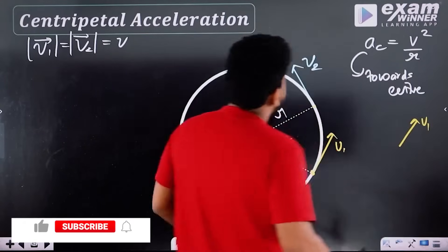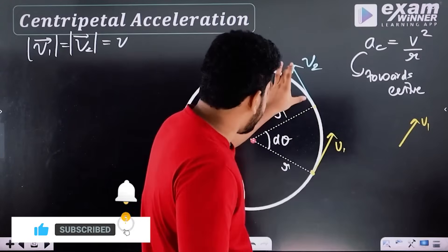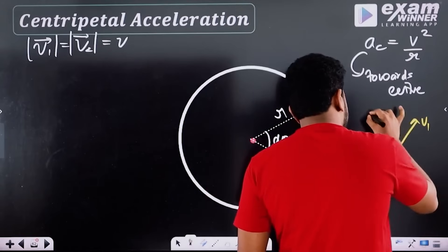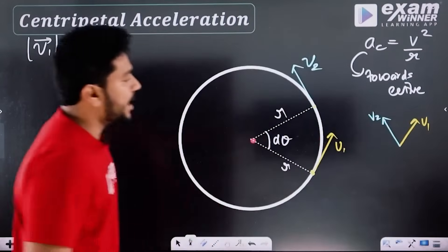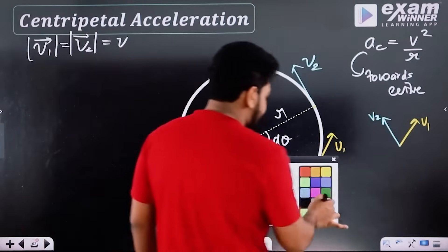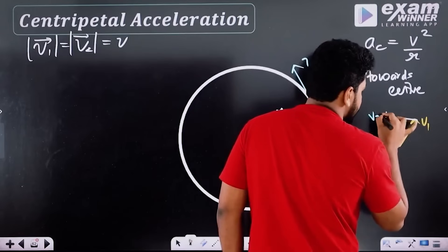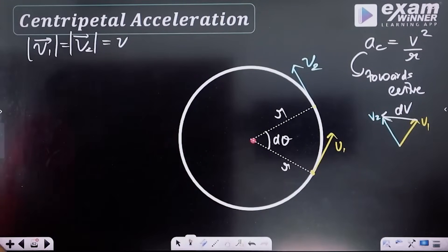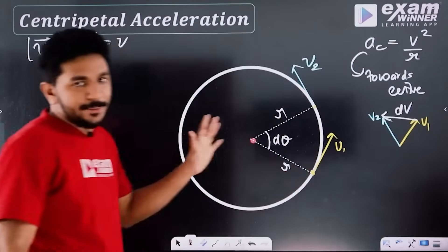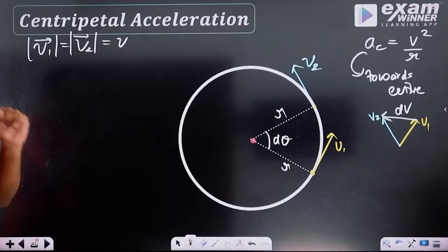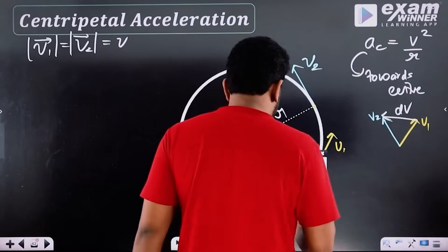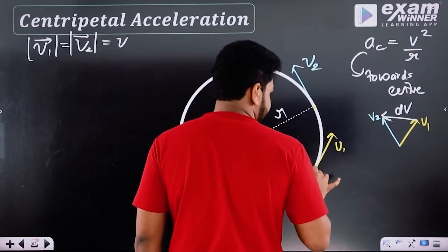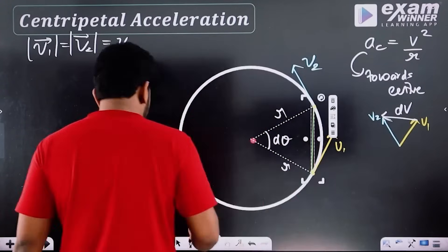V1 point, V2 point. I will give you a DV — the change in velocity. This is DS — that arc length element DS. This is the E line, called DS.